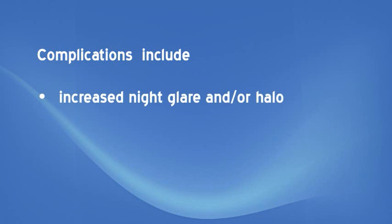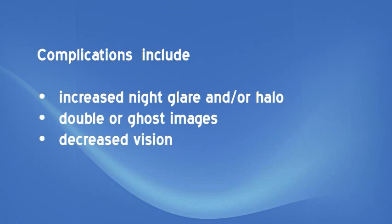Specific complications associated with multifocal IOLs include increased night glare or halos, double or ghost images, and decreased vision due to a lens that is improperly centered. While a multifocal IOL can reduce dependency on glasses, it might result in less sharp vision, which may become worse in dim light or fog. A multifocal IOL is likely to cause some visual side effects such as rings or circles around lights at night.